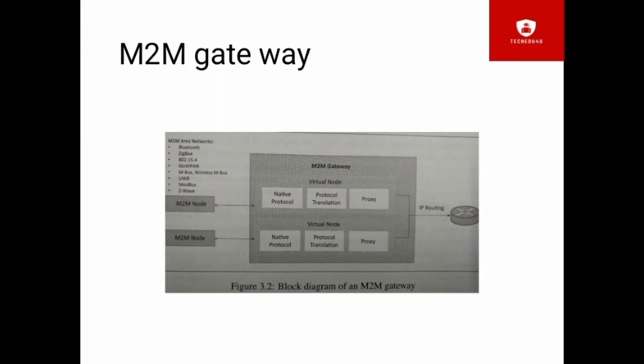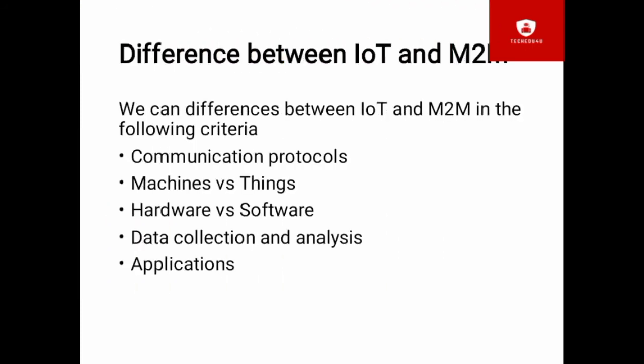Here M2M node to M2M gateway connection uses ZigBee 802.15.4, 6LoWPAN, wireless M-Bus, and Z-Wave. These use IP routing. The gateway performs proxy translations from node native protocols to Internet protocols.